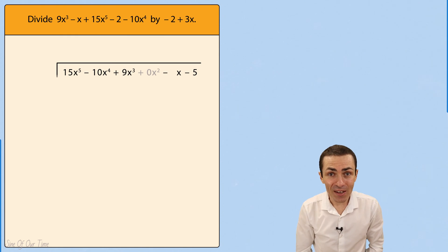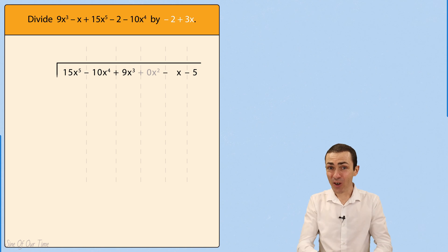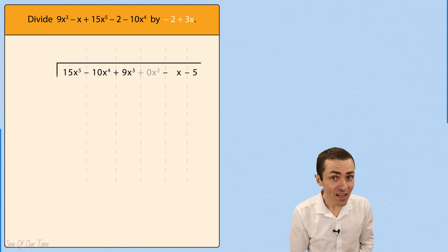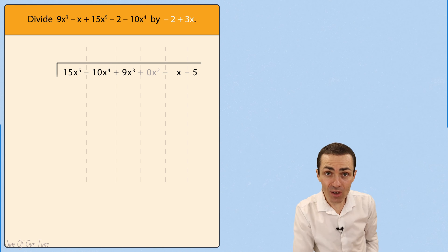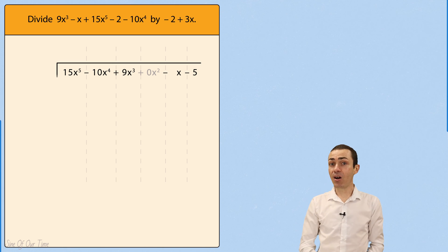Now that looks a whole lot better. The divisor looks strange, but when we write the divisor in descending powers of x to the left of the long division symbol, it looks a whole lot better.